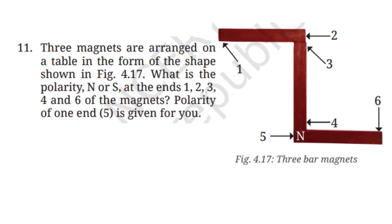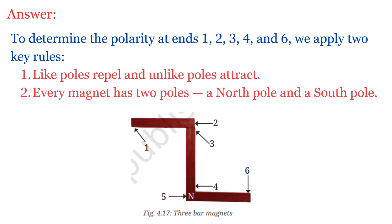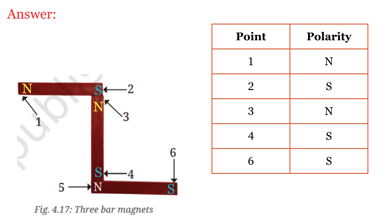Question 11: Three magnets are arranged on a table and we must find the polarity at ends 1, 2, 3, 4, and 6, given that end 5 is a north pole. Since end 5 (north) attracts end 4, end 4 must be south, and the opposite end of that magnet, end 3, is north. Since end 3 (north) attracts end 2, end 2 is south and end 1 is north. End 6 is opposite to end 5 (north), so end 6 is south.